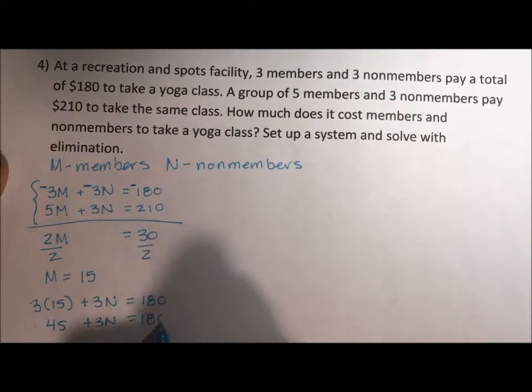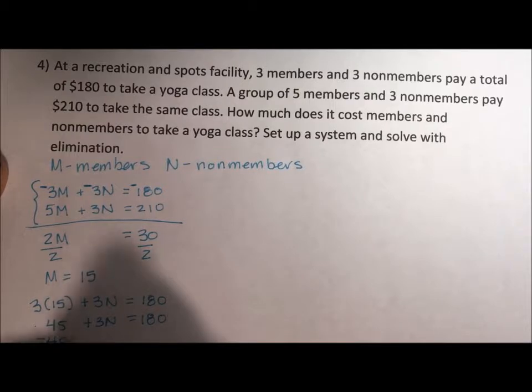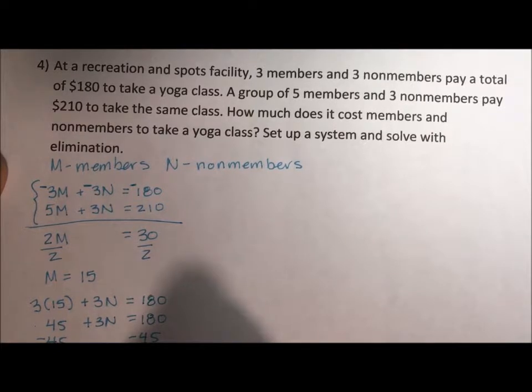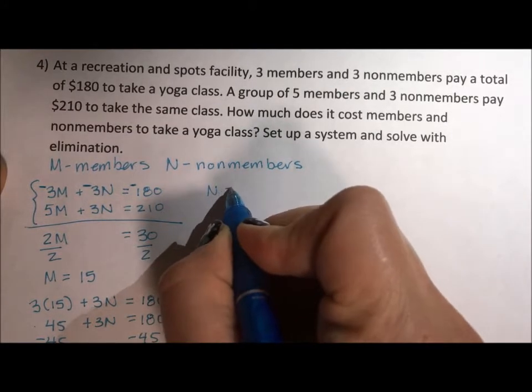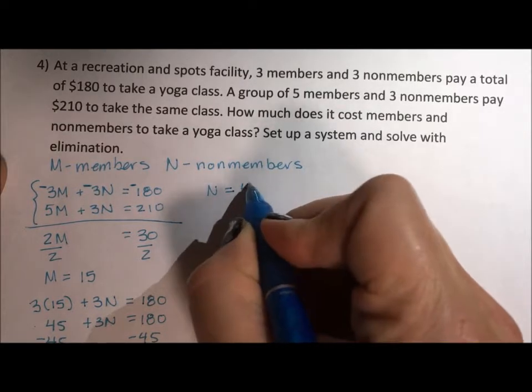If I take that $45 and subtract it from both sides, I get that three times the non-member fee is $135. If I divide by three, I get that the non-members pay $45.